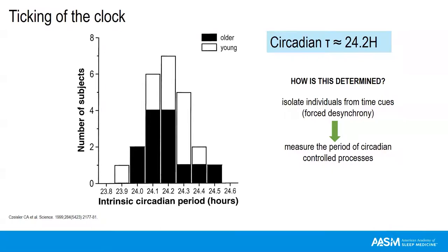The human circadian clock has a circadian tau just over 24 hours, on average 24.18 hours. We know this from research studies where individuals were isolated from light-dark and other time cues and underwent a forced desynchrony protocol to isolate circadian rhythmicity from influences of sleep and wake. Processes wholly controlled by the circadian rhythm — such as secretion of melatonin and cortisol and the rhythm of core body temperature — were measured. The peak-to-peak and trough-to-trough of these cycles was, on average, 24.2 hours.